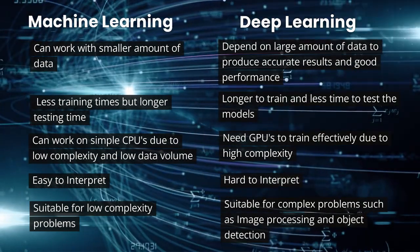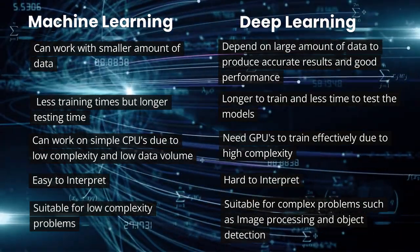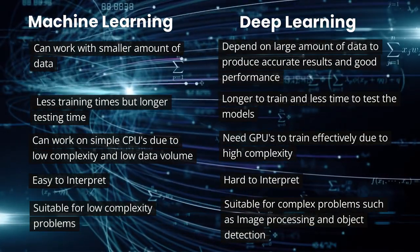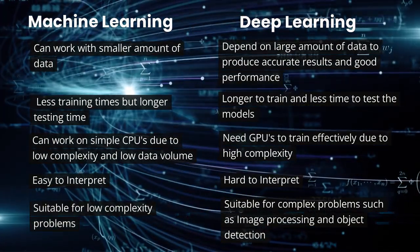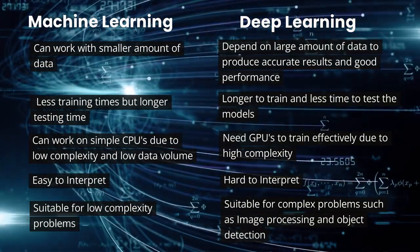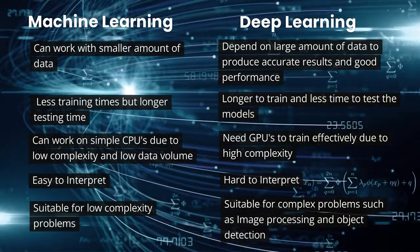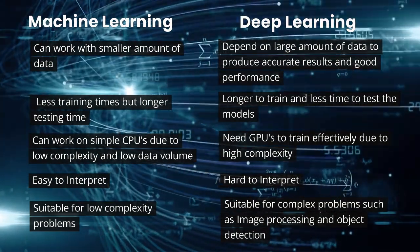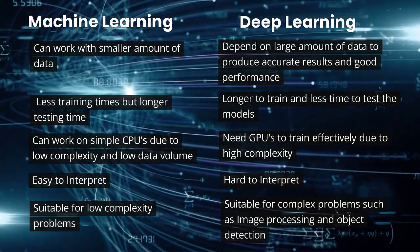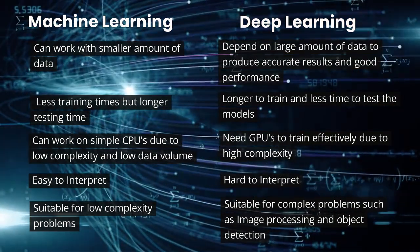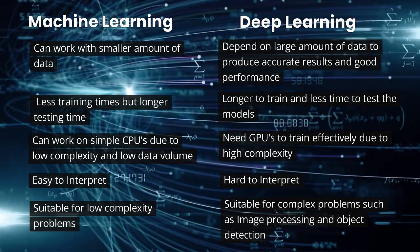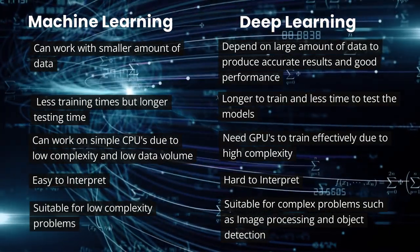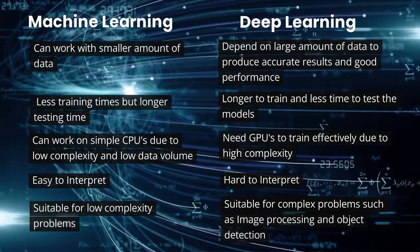Machine learning algorithms usually take less time to train but longer to test, whereas deep learning algorithms, due to the presence of dense neural networks, take longer to train and less time to test. Machine learning algorithms can work on simple CPUs, whereas deep learning algorithms require GPUs to train effectively. Machine learning algorithms are also easy to interpret and explain, however deep learning algorithms are harder to interpret.